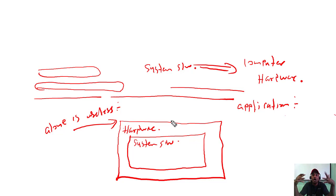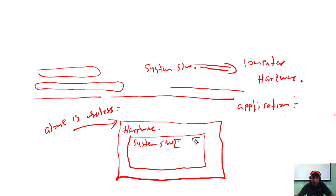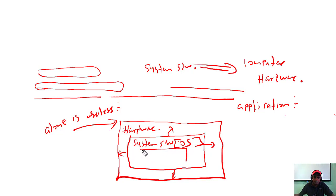How are you going to use those hardware resources for your business? You need to install the operating system. After installing the operating system — the system software — you will be able to utilize those hardware resources. If you buy a laptop without an operating system, you can't use it. You have to install Windows or whatever operating system you choose.